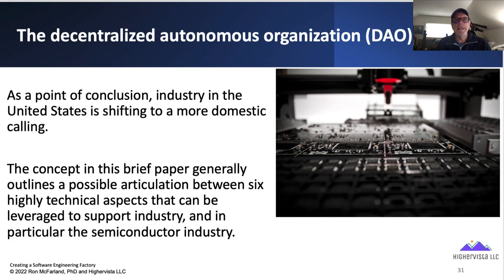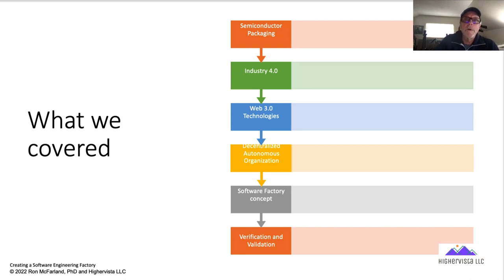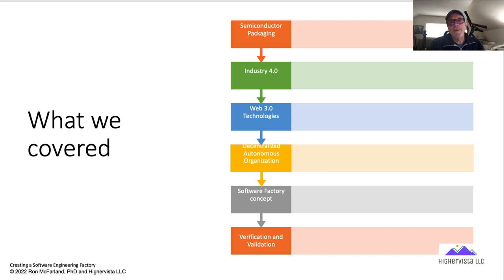As a point of conclusion, industry in the United States is shifting to more of a domestic calling — rehoming a lot of our factories. In this case, we were chatting about the software, hardware, and the whole constellation for semiconductor production. You can take these six items and look at another environment as well. The concept briefly outlines six highly technical aspects: Semiconductor Packaging, Industry 4.0, Web 3.0 Technologies, DAO (Decentralized Autonomous Organizations), Software Factory Concept — including SDLC, Spiral, Agile — and Verification and Validation applicable to hardware and software. Mix and match based on your environment and introduction; you can interject other aspects to build that constellation to support your environment.